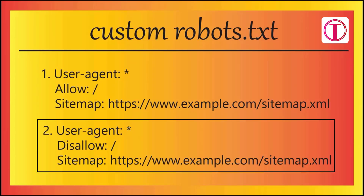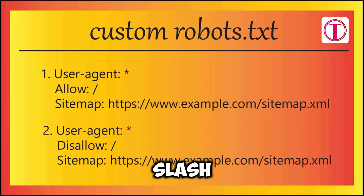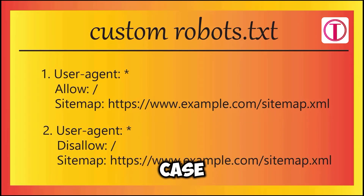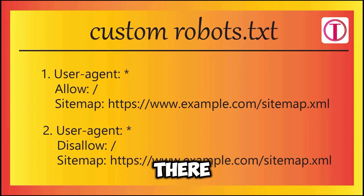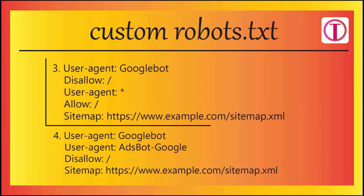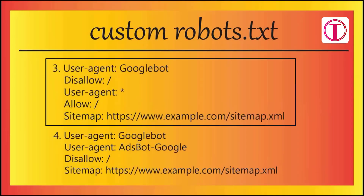In example two, 'User-agent: *' tells all search engine bots to visit the website, but 'Disallow: /' says not to index any page. In this case, no search engine bot will be able to index your website because 'Disallow: /' is present.